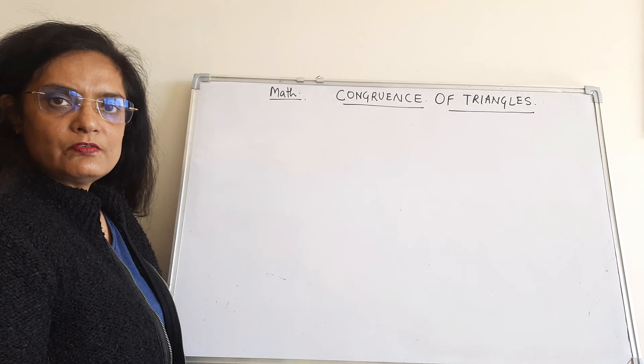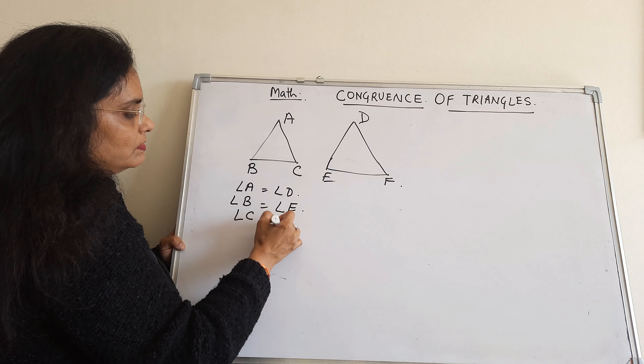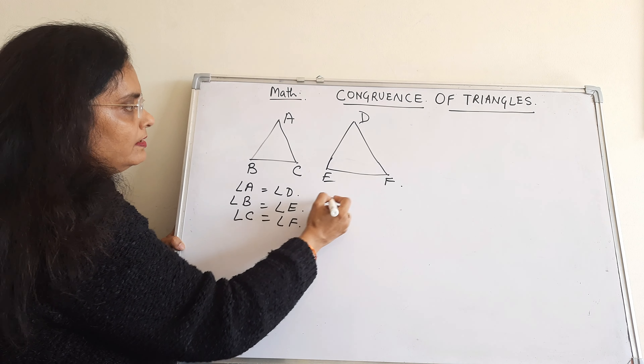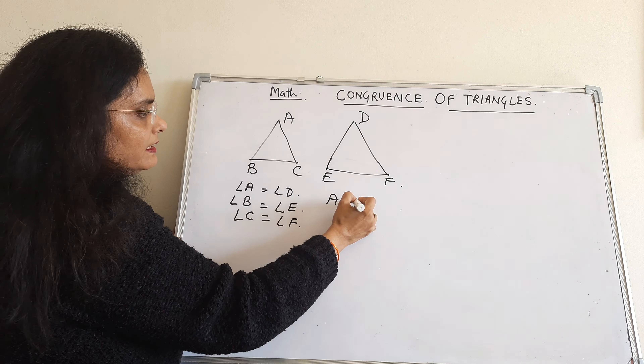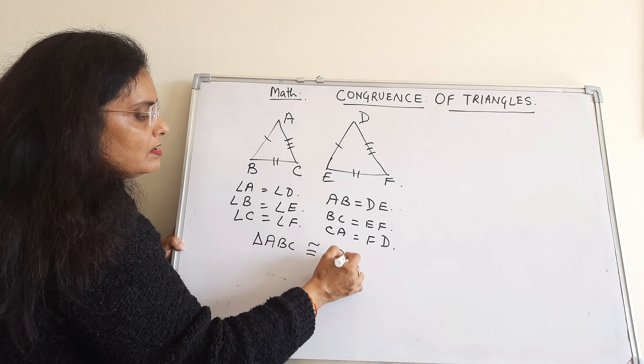Then angle A is equal to angle D, angle B is equal to angle E, angle C is equal to angle F. And side AB is equal to side DE, side BC is equal to side EF, and side CA is equal to side FD. Then triangle ABC and triangle DEF are congruent.